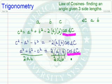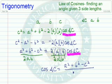And now I have, and I'll just rewrite this this way, the cosine of angle C is equal to a² plus b² minus c², all divided by 2 times a times b.